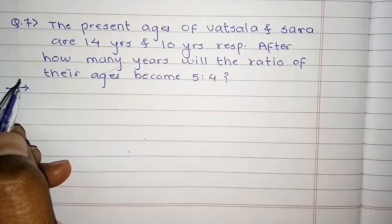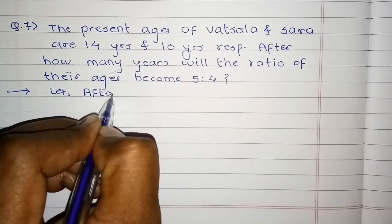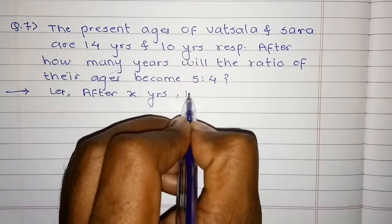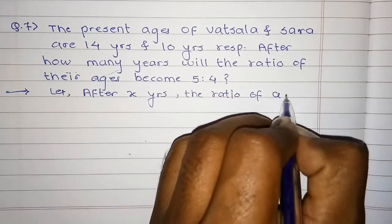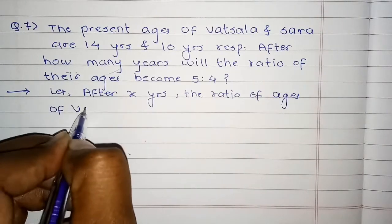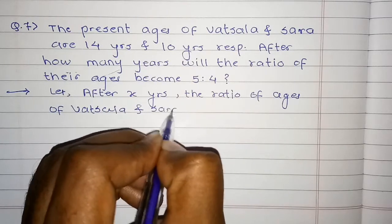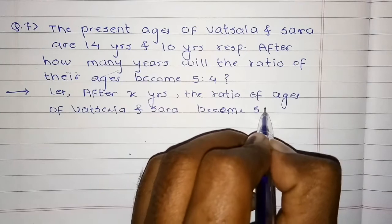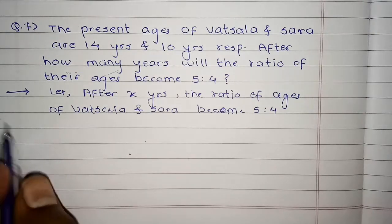तो चलिए देखते हैं, जो Question में बोला है उसी को यहाँ consider करते हैं। Let after X years, the ratio of ages of Vassala and Sara become 5 to 4. X years के बाद उनके ages का ratio बनेगा 5 to 4, तो उनकी present ages हमें पता है।